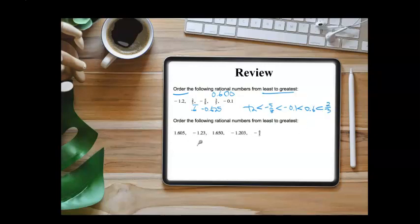Similarly, with this next set, we have 1.605, 1.650, negative 1.23, negative 1.203, and then we have this one by itself, which can be simplified into a decimal form as negative 1.2. So obviously, from among these, we have three that are negative.